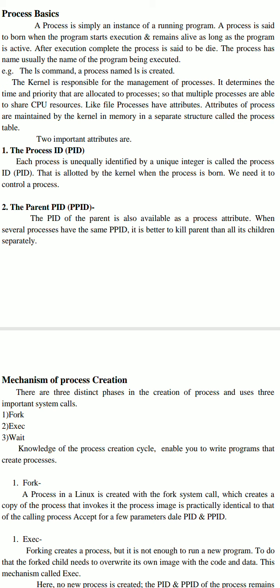The process has a name, and mostly it depends upon the program name. We treat the program name as the process name. For example, the command 'ls' - when you apply 'ls', it is a program being executed, so the process created from it is named 'ls'. The kernel is responsible for management of processes - it determines and fixes the time and priority allocated to each process so that multiple processes are able to share the CPU.